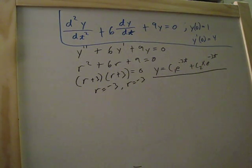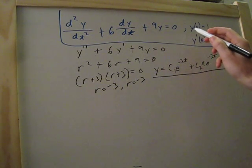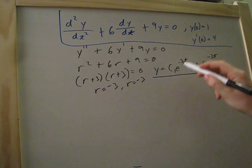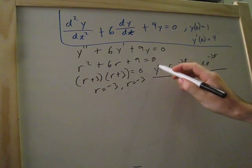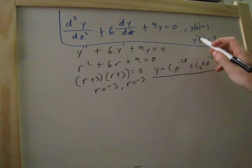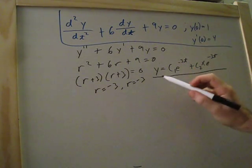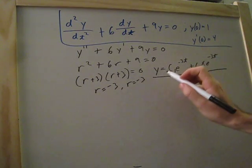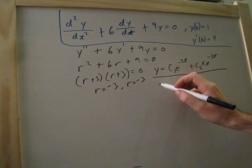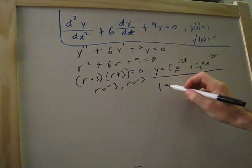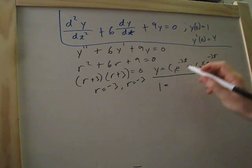This is where the initial value problem comes in. We'll substitute this down here, and then we'll find the derivative of all this, and substitute this part down there. So first we'll substitute this in. So y of 0 is equal to 1, so we'll make y 1, and any time we see a t, we'll substitute in 0.